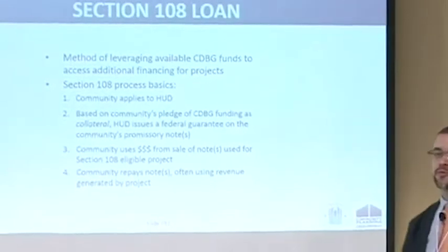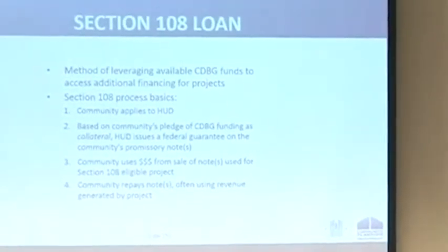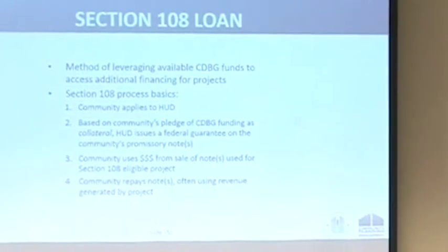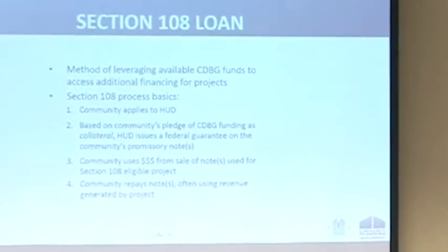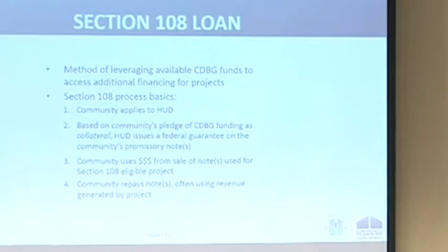Here's a basic outline of the Section 108 process: you apply to HUD for the 108 authorization and pledge your future CDBG dollars as collateral. HUD generates that money through private investors and provides you access to the 108 loan. You then repay that note using revenue generated by the project. The Economic Development Toolkit on your USB file goes into a lot more detail about this process.